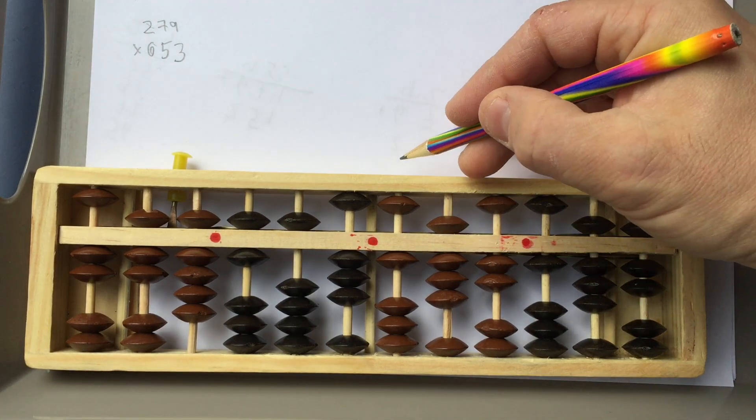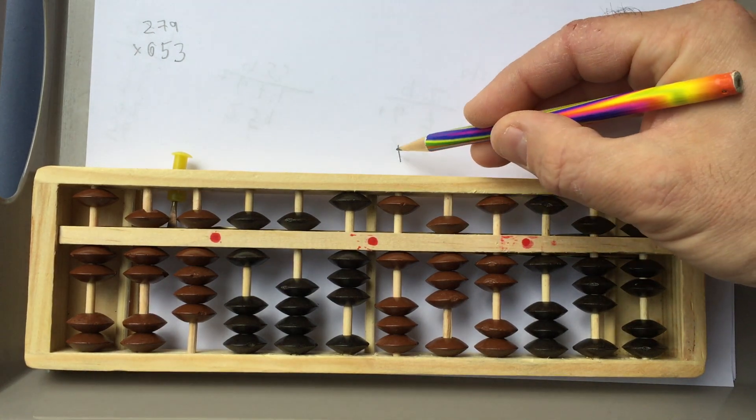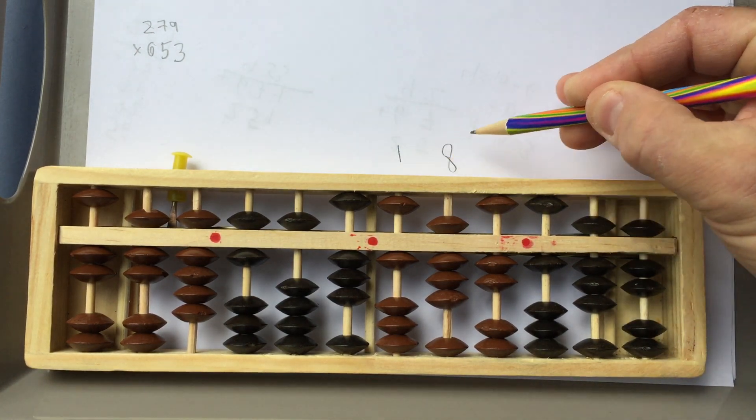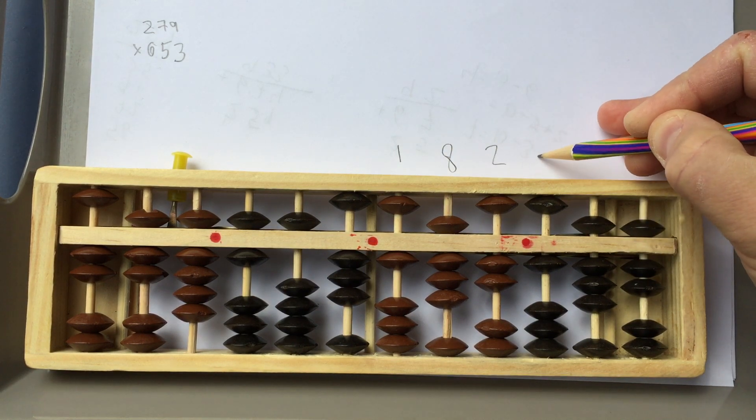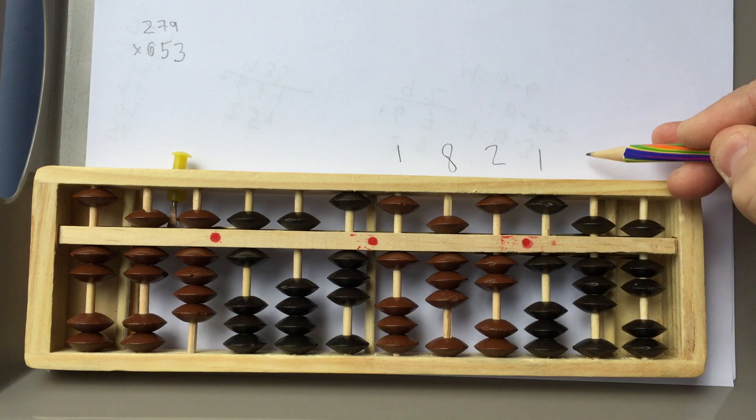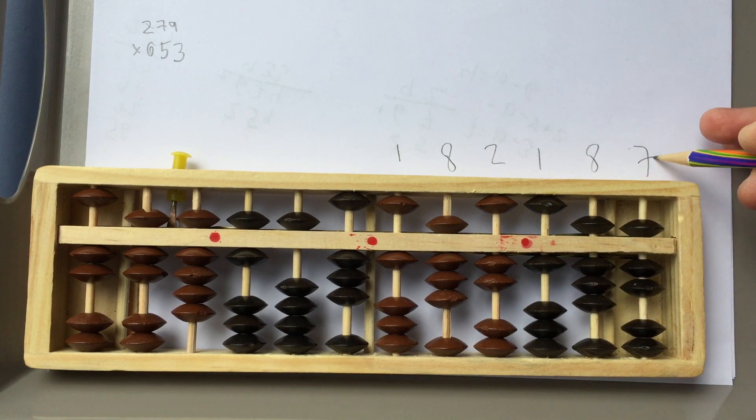What is this? 2? Sorry. 1, 8, 7. Okay, let's see if this is correct.